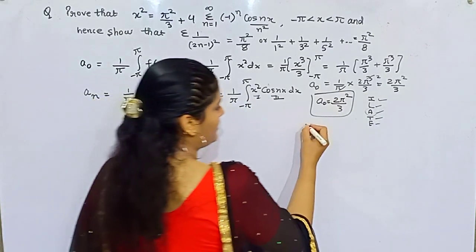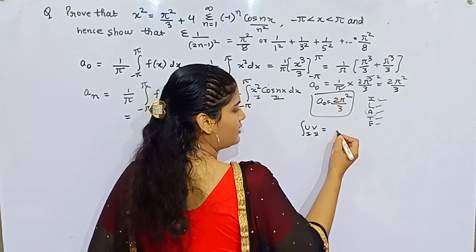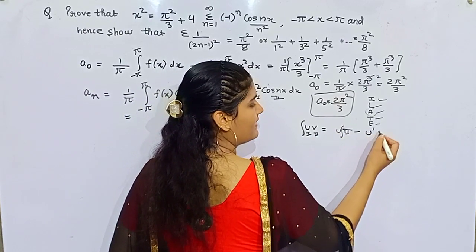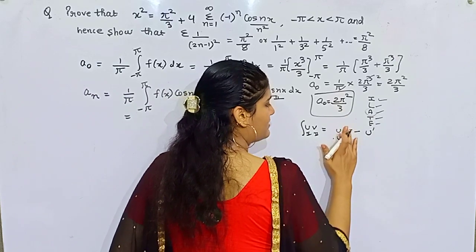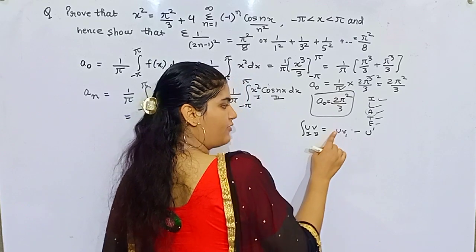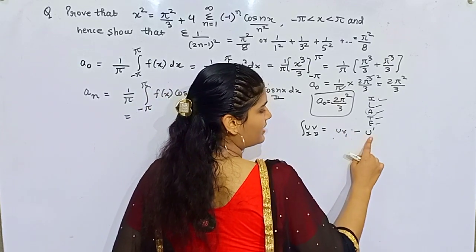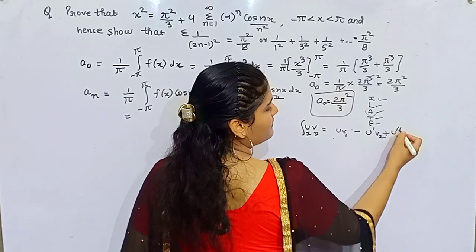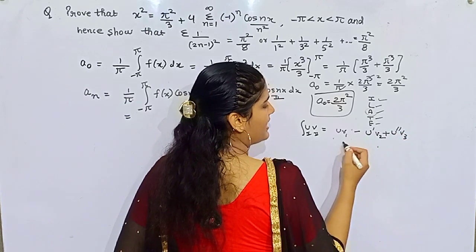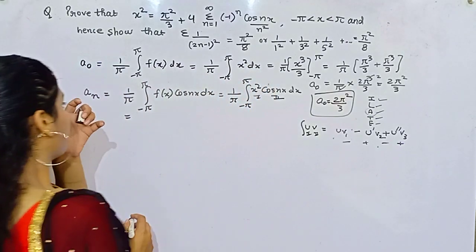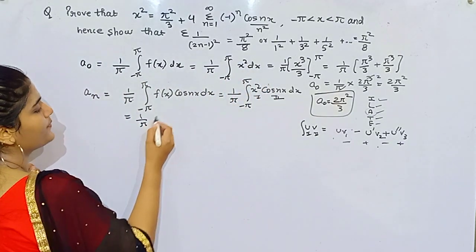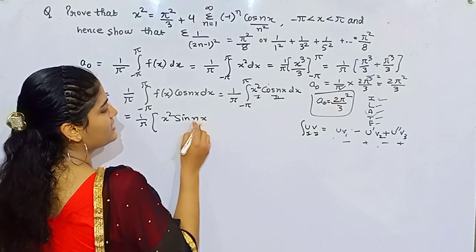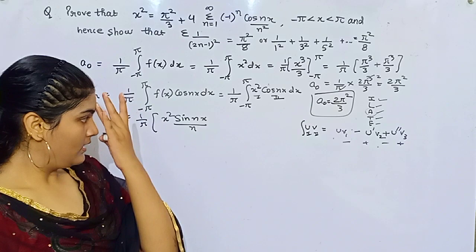The formula for integration by parts is: first function as it is, times the integration of the second, minus the derivative of the first function times the integration of what you've formed, and this continues with alternating signs. So applying this: first function x squared as it is, second integration gives sin(nx)/n. Then minus derivative 2x, times integration of sin which is minus cos(nx)/n, giving minus cos(nx)/n².